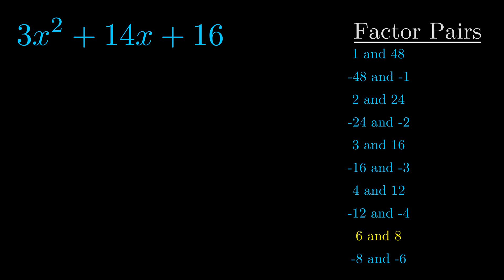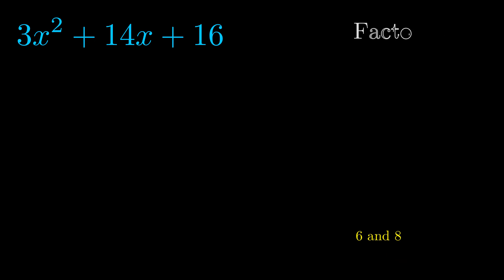And really, this is the only factor pair that we need. Now, once we have this factor pair, what we want to do is use it to split up the b value.